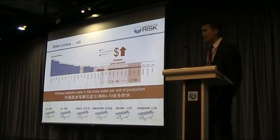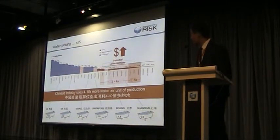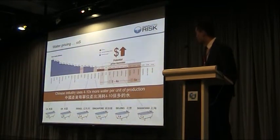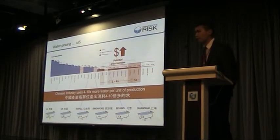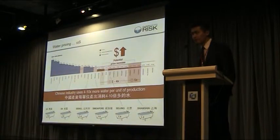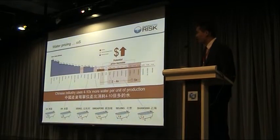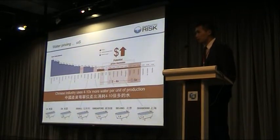On top of this, Chinese industry is also not very water efficient — they use 4 to 10 times more water per unit of production compared to developed countries. But on the other hand, this also means there is a lot of room to improve.